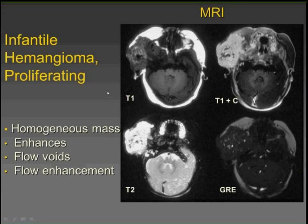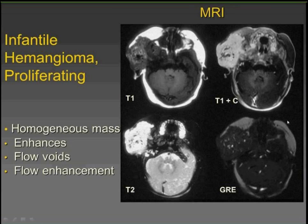Here's a proliferating phase hemangioma with the various sequences we use — either T2 or FATSAT or STIR, T1 with contrast, and some type of flow-sensitive study. We used to do axial gradient images, but now it's just as quick to do an MR angiogram. The typical features are that they're really homogeneous, they enhance really uniformly and brightly, sort of like a light bulb. The only inhomogeneity is related to the vascular flow voids visible on all sequences.